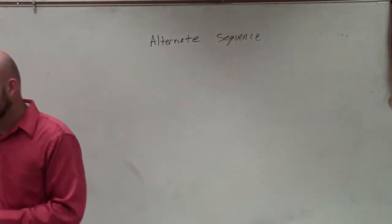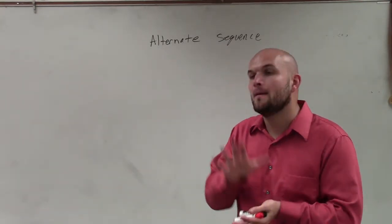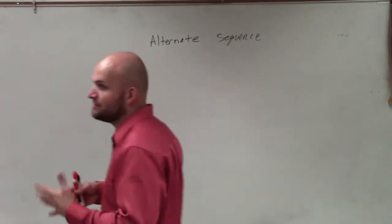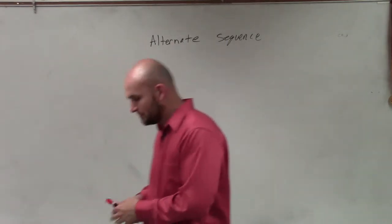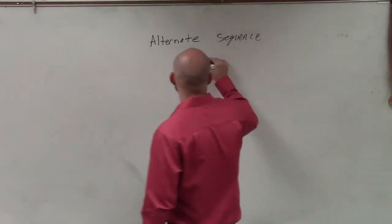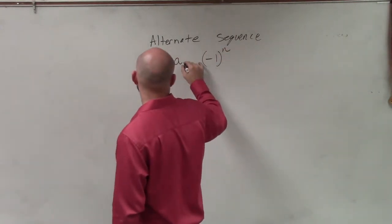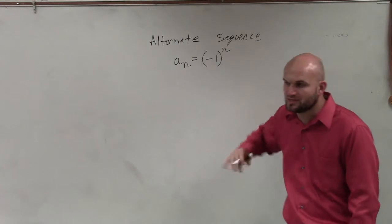Whenever you have a sequence that has alternating positive to negative values, please make sure you write this down. Because whenever we're going to have alternating values, this is what we're going to have to apply in addition to our rule. The alternating term that we're going to use is simply negative 1 raised to the nth power. There's a rule, but that's mostly what we're going to be using — negative 1 raised to the nth.